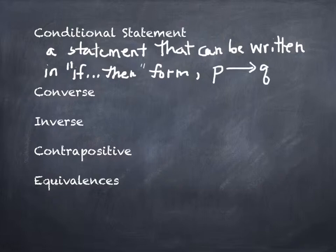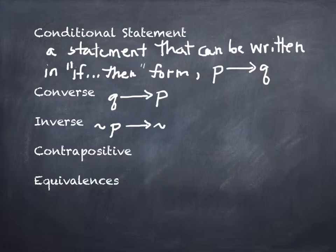There are three different types of statements that relate to the original conditional statement. The first is the converse, and the converse is the argument P arrow Q in reverse, so this is Q arrow P. The inverse has the same ordering of P and Q but we negate both of them. And the contrapositive both switches the order and negates them, so this is tilde Q implies tilde P.